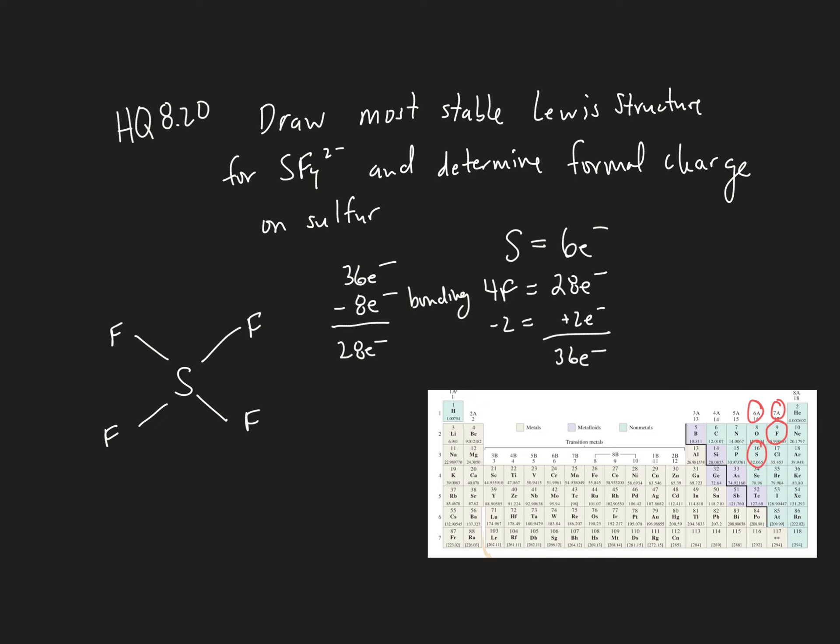So the next thing we're going to do is fill the lone pairs of fluorine. So each fluorine needs 6 more. So there's 6, there's 12, there's 18, and there's 24 electrons.